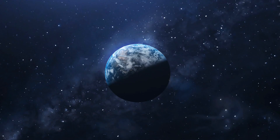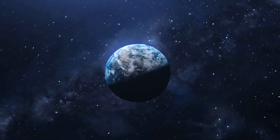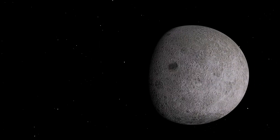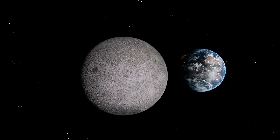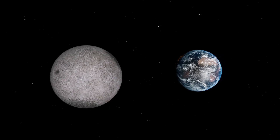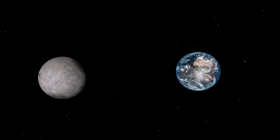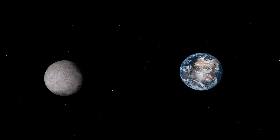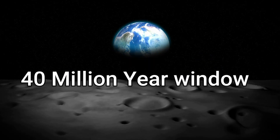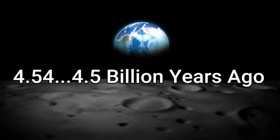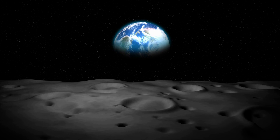If on the other hand planet Earth already exists, the next thing you have to figure out is whether you're being swallowed up by molten lava. If yes, the next step is to glance up and see if the Earth has a moon before you run out of breath or burn to death — whichever comes first. If you see the moon, that signifies you're within a 40-million-year window between 4.54 and 4.5 billion years ago.